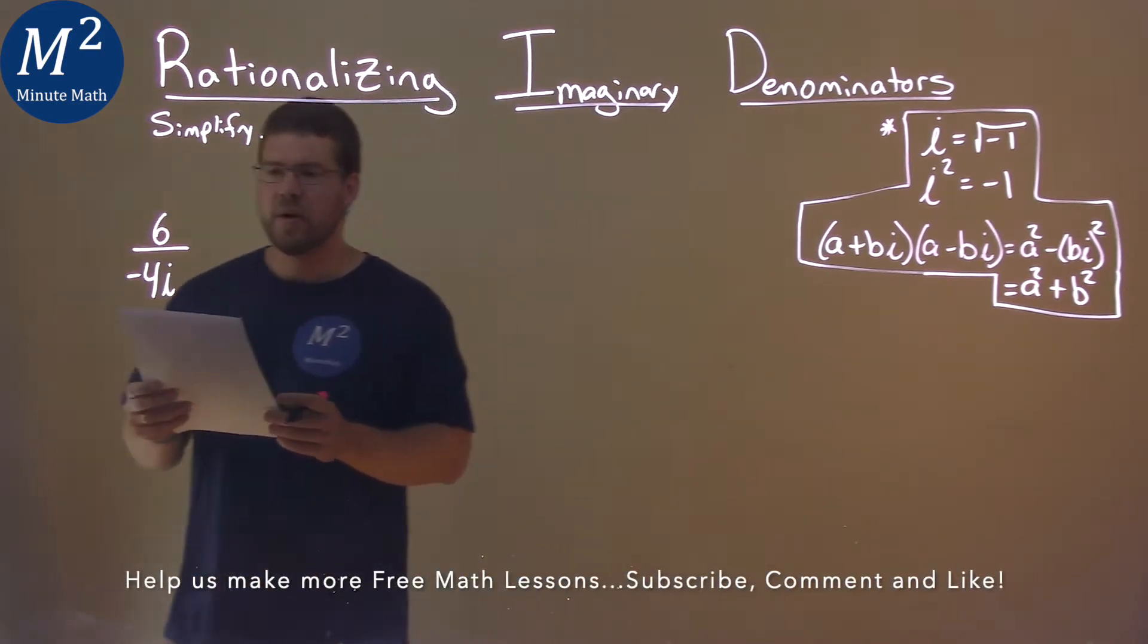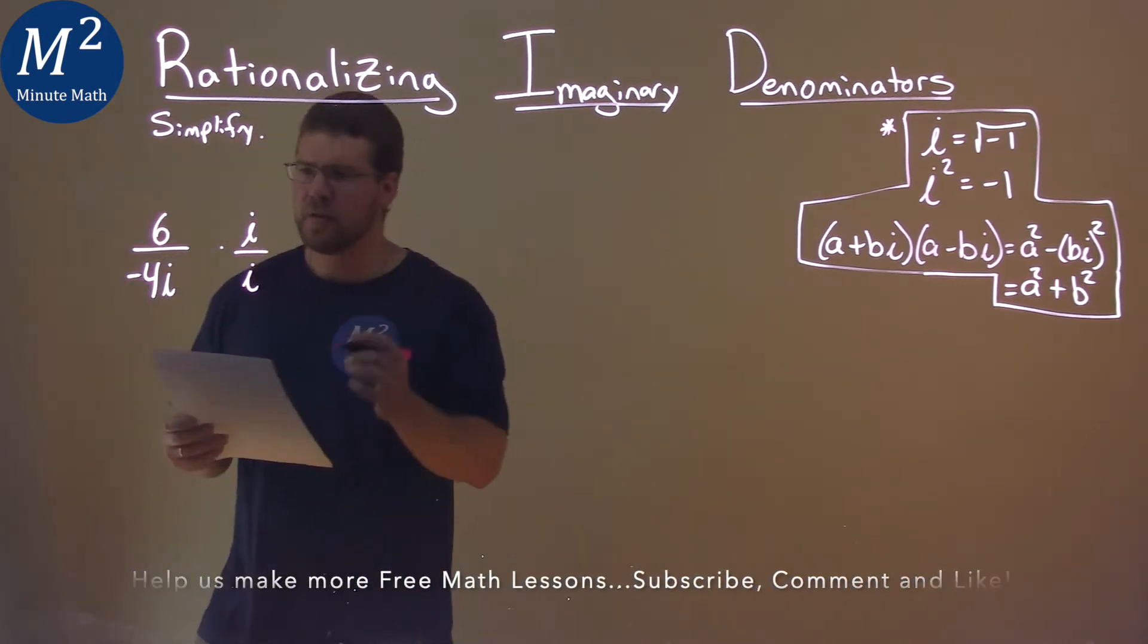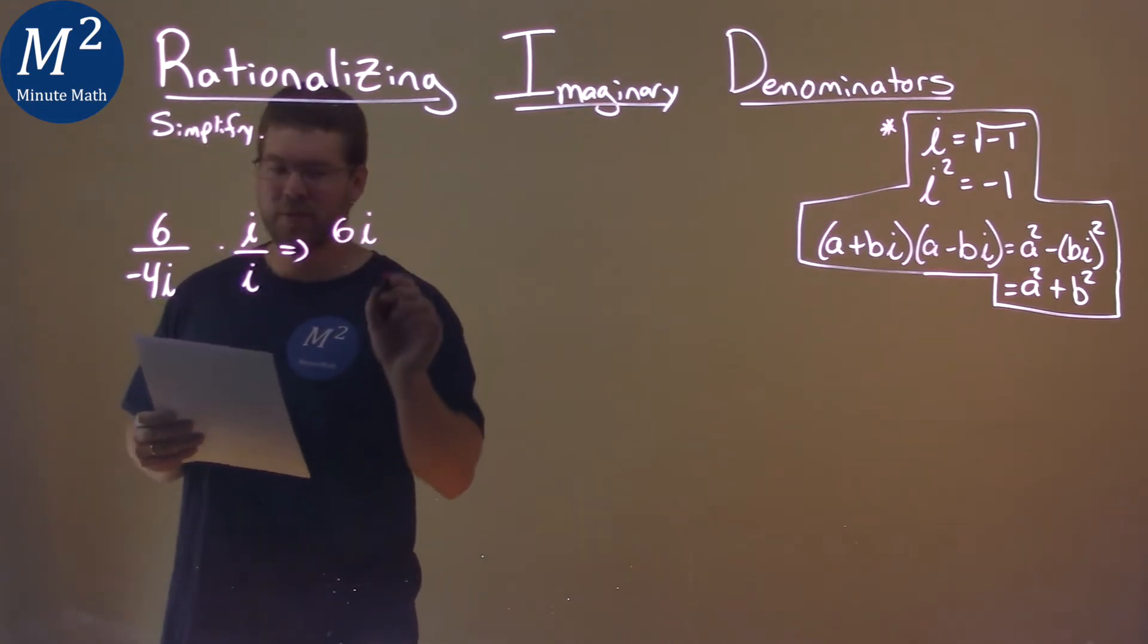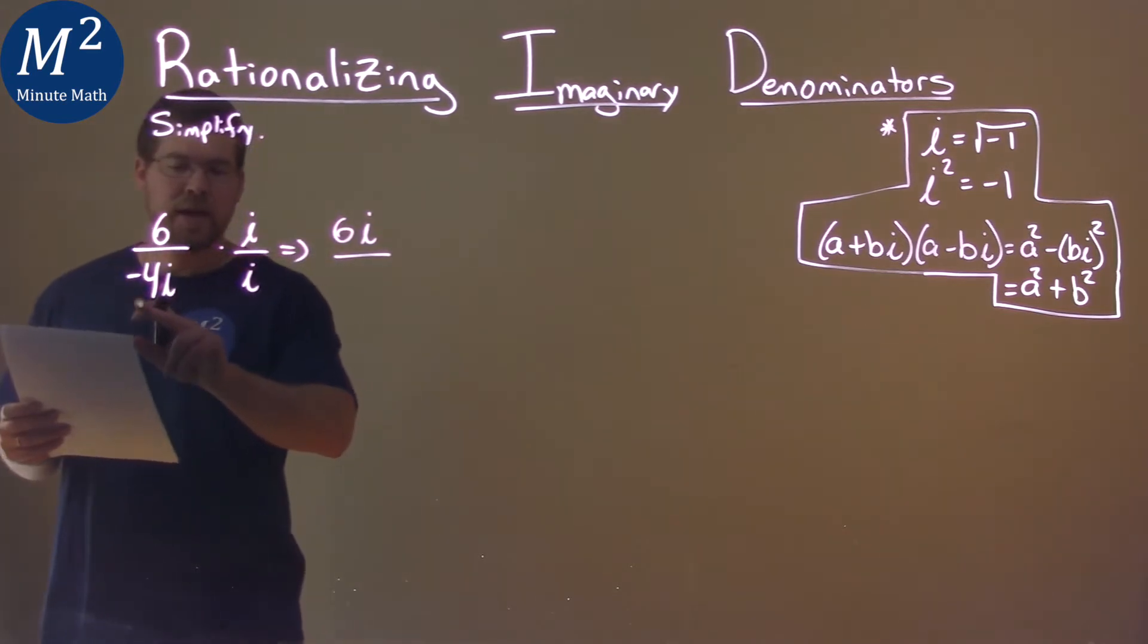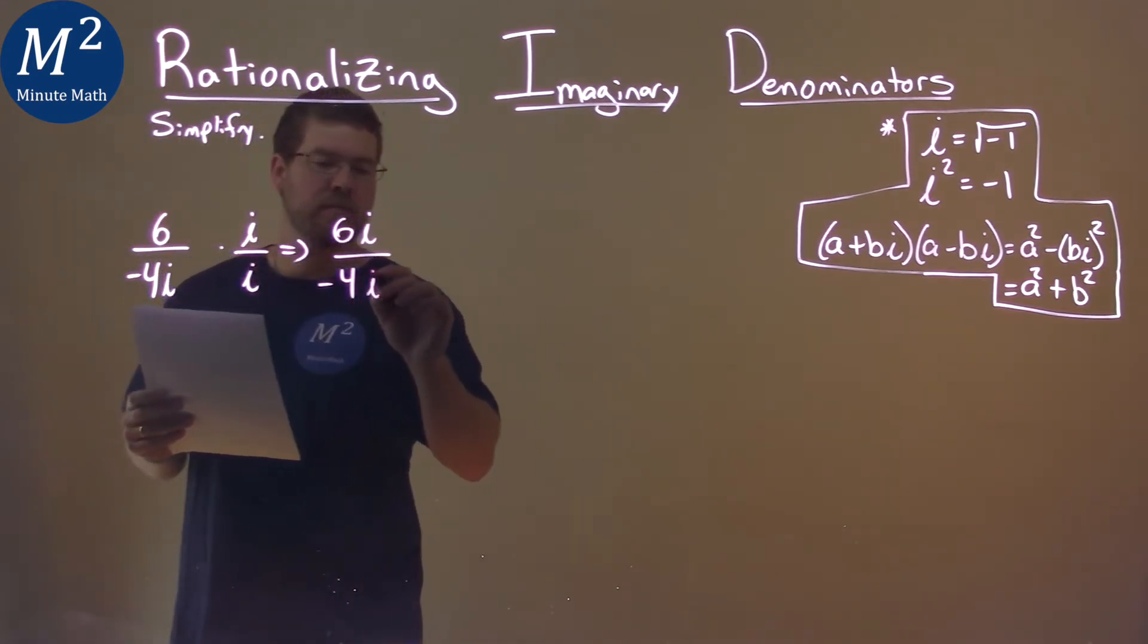Well, the first thing I want to do is I'm going to take this and multiply it by i over i. And in doing so, I can multiply out the numerator: 6 times i is 6i, pretty easy. And the denominator: negative 4i times i is negative 4, and i times i is i squared.